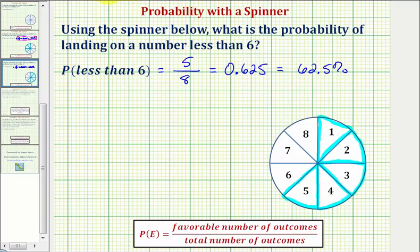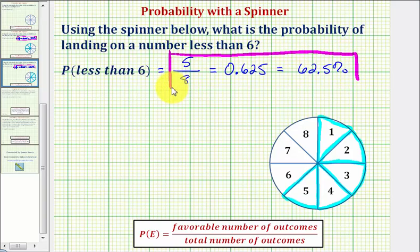So these are the three ways we can express our probability. If the probability is equal to five-eighths, theoretically, this means if we spin the spinner, we expect to get a number that's less than six five out of every eight spins. And as a percentage, we expect to get a number that's less than six 62.5 percent of our spins.